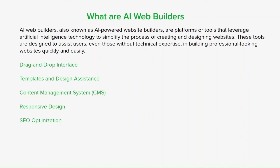Many AI web builders offer built-in SEO features that help optimize your website's structure, meta tags, and headings to improve visibility on search engine results pages. Some also include e-commerce features, allowing you to create an online store with product listings, shopping carts, and payment integration. Additionally, many provide analytics tools to track website performance — like visitor statistics and conversion rates — helping you understand user behavior and make informed decisions to enhance your website's effectiveness.